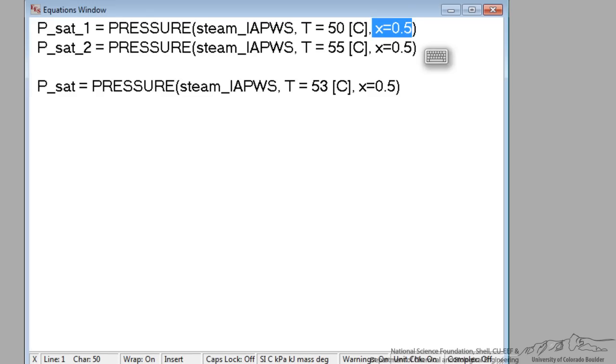And by the way I am using a quality of 50% arbitrarily in EES. I could just as well do a quality of 0 or a quality of 1 if I wanted to. I am just telling EES that I am working with a saturated liquid.